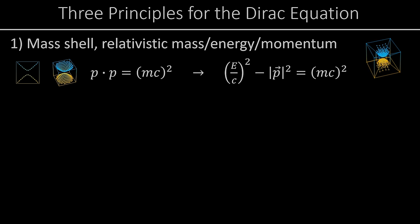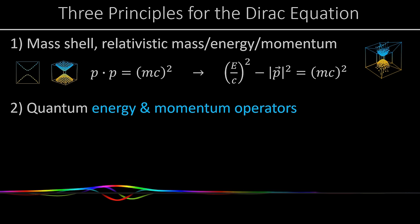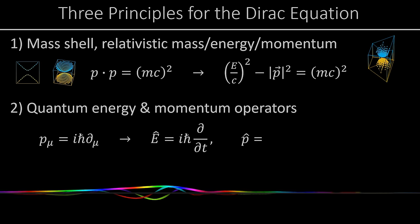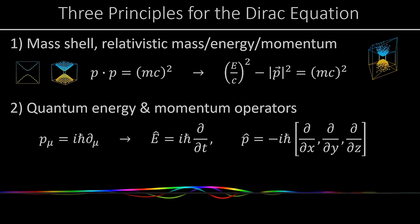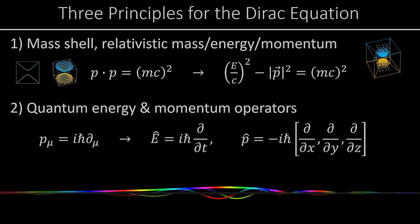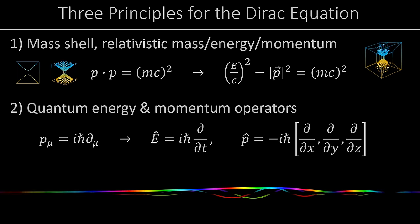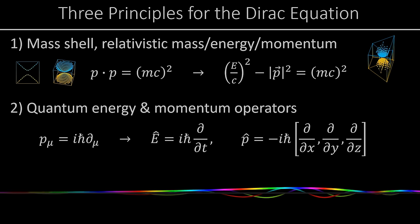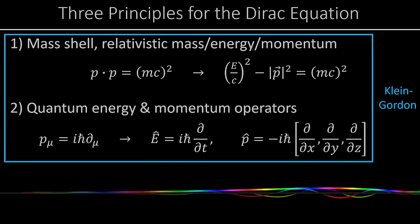Ingredient number two is the quantum energy and momentum operators. The four-momentum equals i times h-bar times the four-gradient of the wave function. Writing that in terms of energy and three-momentum: the energy operator is i·ℏ·∂/∂t, and the momentum operator is −i·ℏ times the gradient.